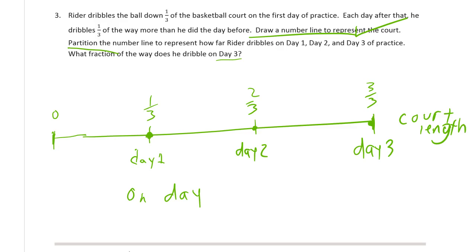And I partitioned it. And I showed how far he dribbled on day one, on day two, and on day three. So on day three, this is what fraction of the way he drew. I could say the whole court, but it says it's a fraction. So I'm going to write, I could write one whole, or I could write three thirds. So day three, he dribbled three thirds of the distance across the court.